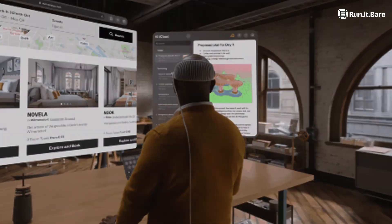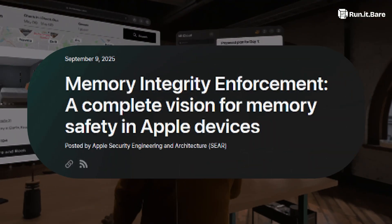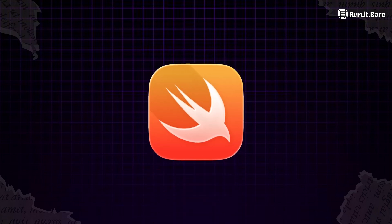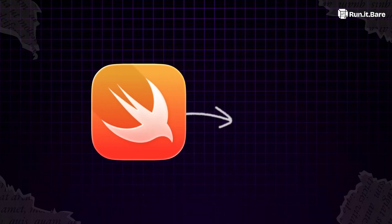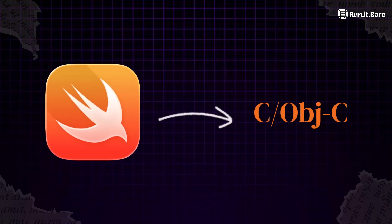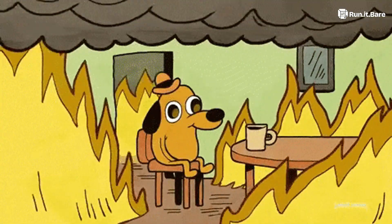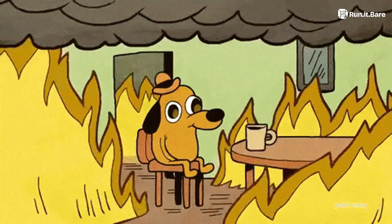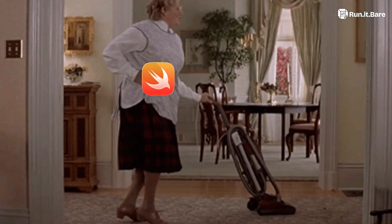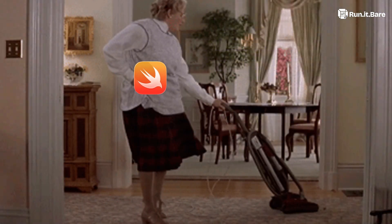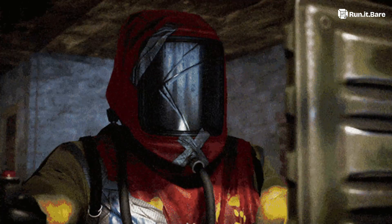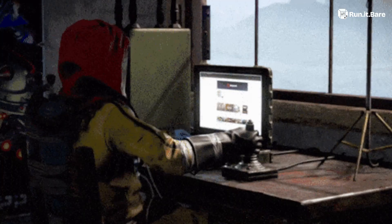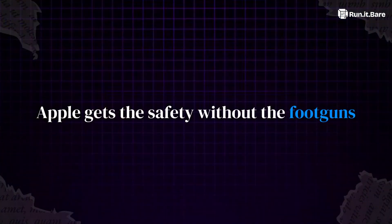Apple engineers are clearly borrowing memory safety and concurrency tricks from Rust. Why? Because Swift, as good as it is, still sits on C and Objective-C duct tape. That's why you still see 'unexpectedly found nil' errors in 2025. Swift cleansed the UI layer, but it can't fix the shaky foundations. Rust can — or at least Rust-inspired systems programming can. Apple gets the safety without the foot guns.